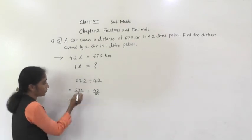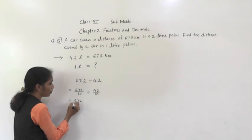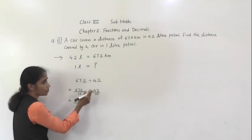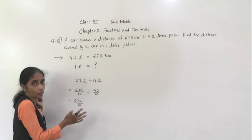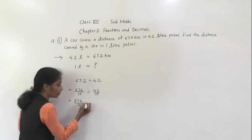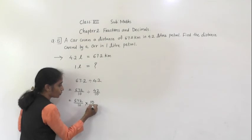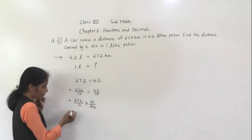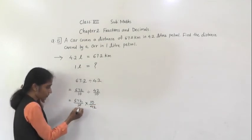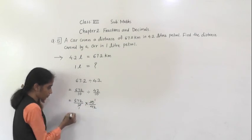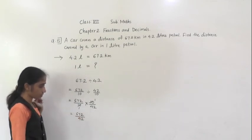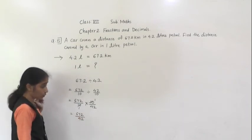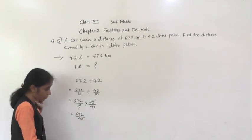So now we can divide: 672 upon 10 divided by 42 upon 10. Do the reciprocal of 42 upon 10, which is 10 upon 42. So 10 ones are 10 — they cancel. What will remain? 672 divided by 42. Now we got 672 divided by 42.